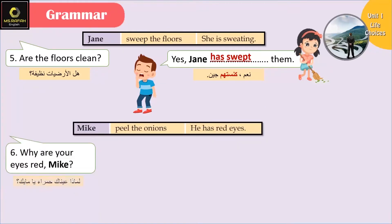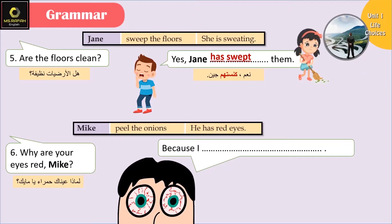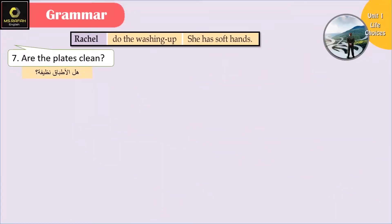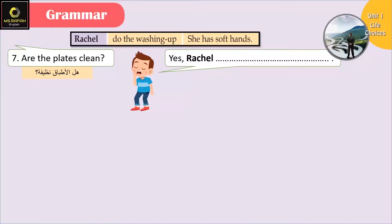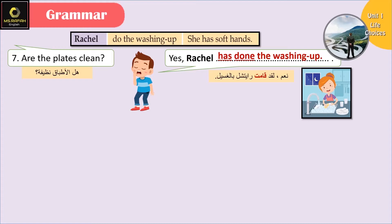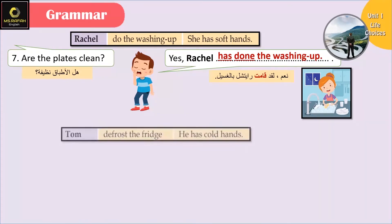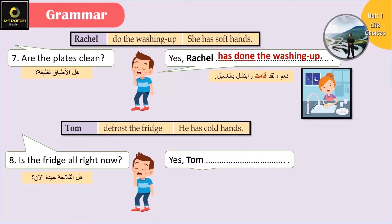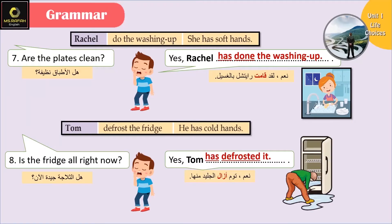Why are your eyes red, Mike? ليش هلأ عيونك حمرة؟ Because I have been peeling the onions. Are the plates clean? Yes, Rachel has done the washing up - Rachel نظفتهم. Is the fridge alright now? Yes, Tom has defrosted it - Tom أزال الجليد منه، هو أزال وخلص، ما في عندي استمرارية.